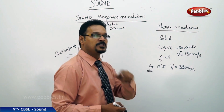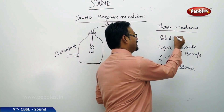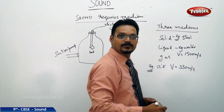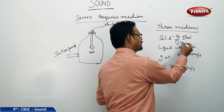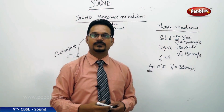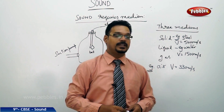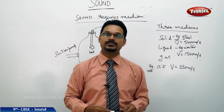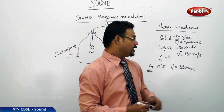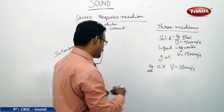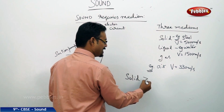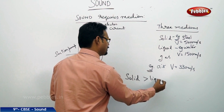Here is another surprising fact: in solids, for example steel, the speed of sound is 5000 meters per second — it travels 5000 meters in just one second. So the order is clear: the speed of sound is greatest in solids, then in liquids, and least in gases.